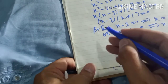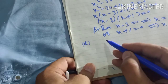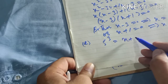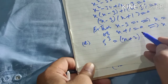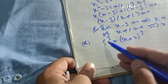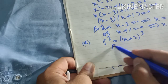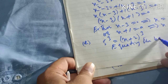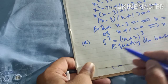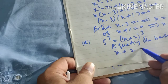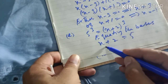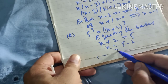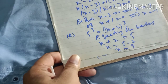Part e: 5³ = (x + 2)³. Since the powers are the same, we equate the bases: x + 2 = 5, so x = 5 − 2 = 3. This is our solution.